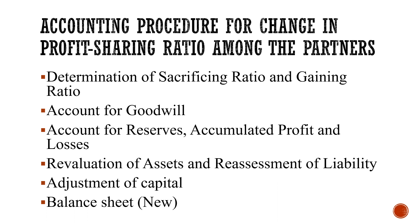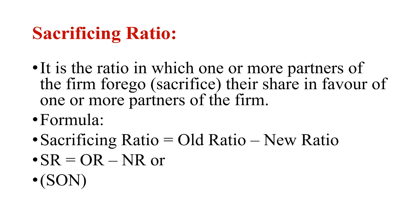Determination of sacrificing ratio and gaining ratio. Sacrificing ratio is the ratio in which one or more partners of the firm sacrifice their share in favor of one or more other partners of the firm. The formula is: Sacrificing Ratio (SR) = Old Ratio (OR) minus New Ratio (NR). Memory tip: SON — Sacrificing ratio equals Old ratio minus New ratio. Do not write this memory tip in your notebook or examination sheet.